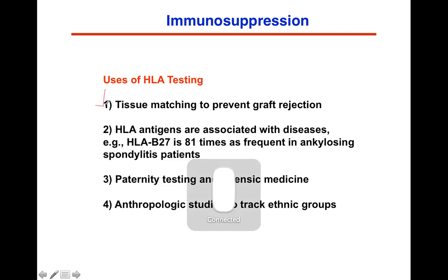Tissue matching is important for transplantation. You want to have usually at least five of the HLAs matched — a minimum of five. That's usually good, meaning the transplant may hold fairly well. It depends on the institution and where it's being done as to the degree of success. Places like the University of Minnesota, which have tremendous experience in transplants,